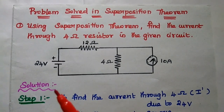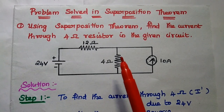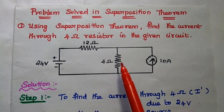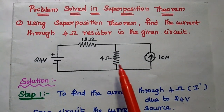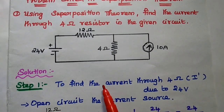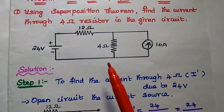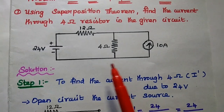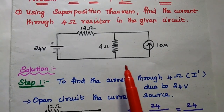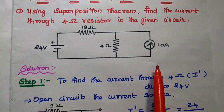This is the given circuit with a voltage source and current source. We are going to use superposition theorem to find out the current through this 4 ohm resistor. In superposition theorem, the first step is to select only one source at a time — the rest of the sources: voltage sources are short-circuited and current sources are open-circuited.